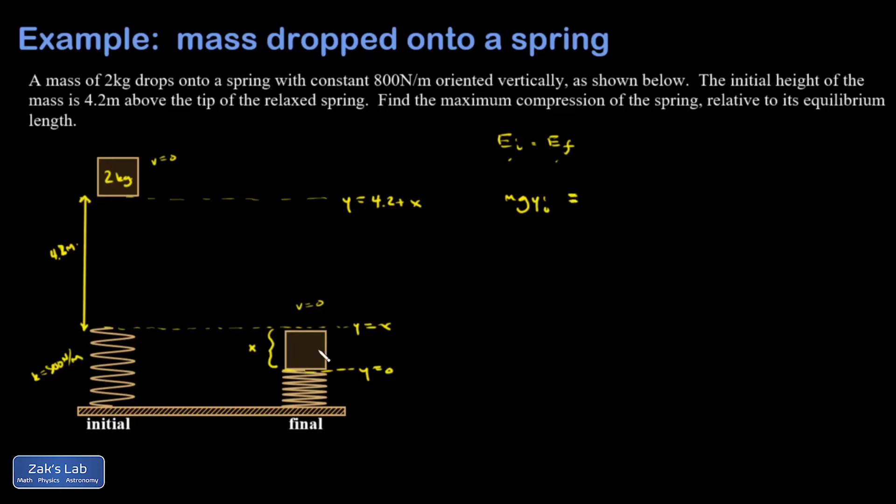In my final state, the block is sitting at a height of y equals 0, so the potential energy is 0. That was my motivation for putting the 0 right there. And all I have is energy stored in the spring, so that's going to be 1/2 kx squared.